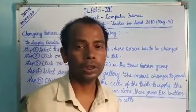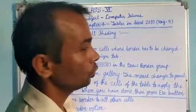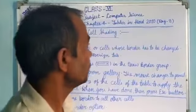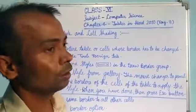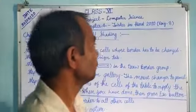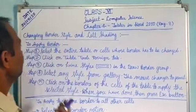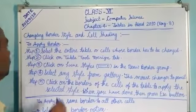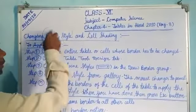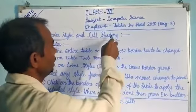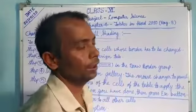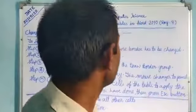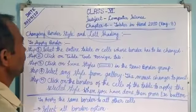In the previous classes, I have already talked to you about splitting cells, merging cells, and the alignment of cells. And in this video, I am going to talk to you about changing border style and cell settings — how we change the border styles, their colors, and their settings.